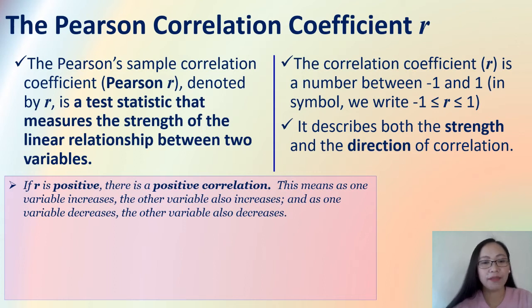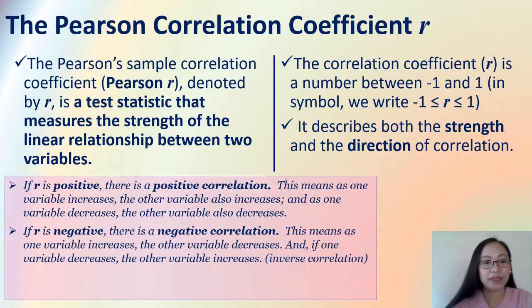If R is positive, there is a positive correlation. This means as one variable increases, the other variable also increases. And as one variable decreases, the other variable also decreases. That is for the positive correlation.